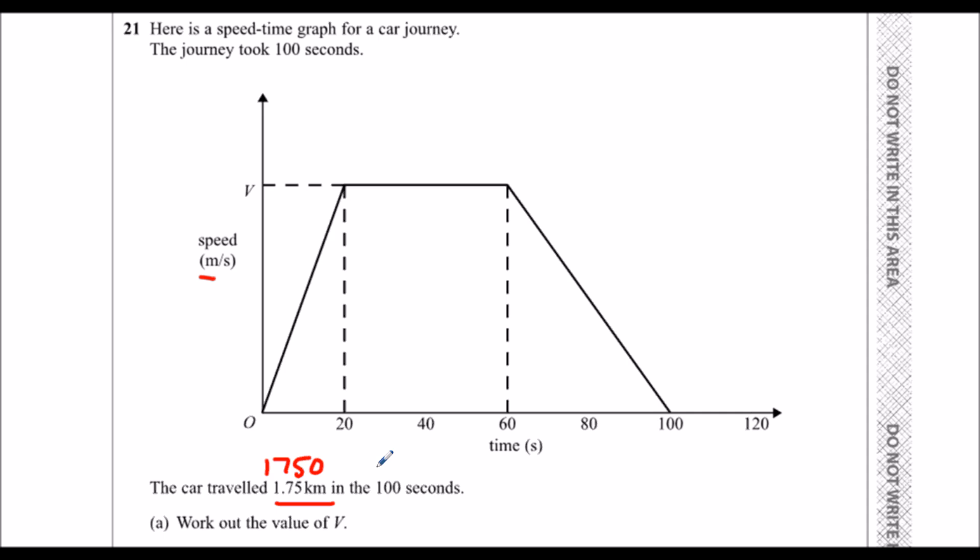So let's have 1750 meters. Kilometers to meters is times by a thousand. Whenever you have k it means a thousand, k means a thousand. So kilometers, thousand meters. Work out the value of v.